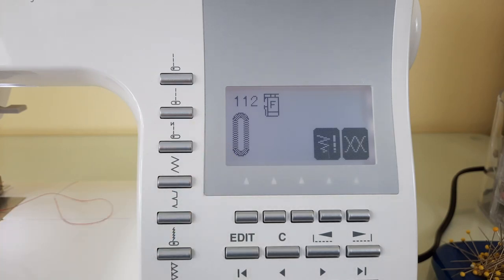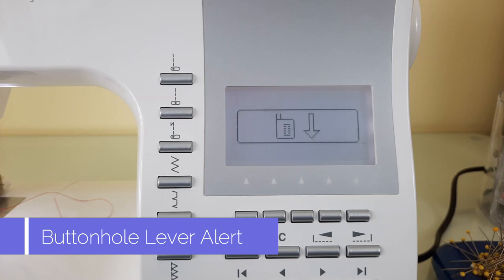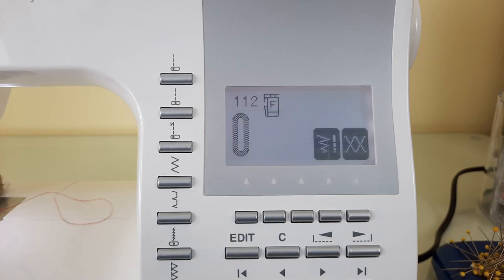I put my buttonhole foot on, I had my fabric, my test fabric set up, I had everything ready to go. I put my presser foot down and this is what I found: that is the alert that shows me that I forgot to put the buttonhole lever down. Without putting the buttonhole lever down, the buttonhole foot does not know how to engage with the machine to know how long to stitch the buttonhole.